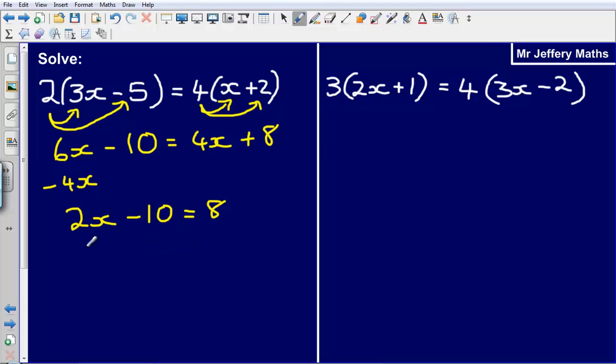From this point I now have an equation that we looked at in the second video. So 2x minus 10 is equal to 8. I'm going to undo this minus 10 by adding on 10. So that now leaves me with 2x is equal to 18.